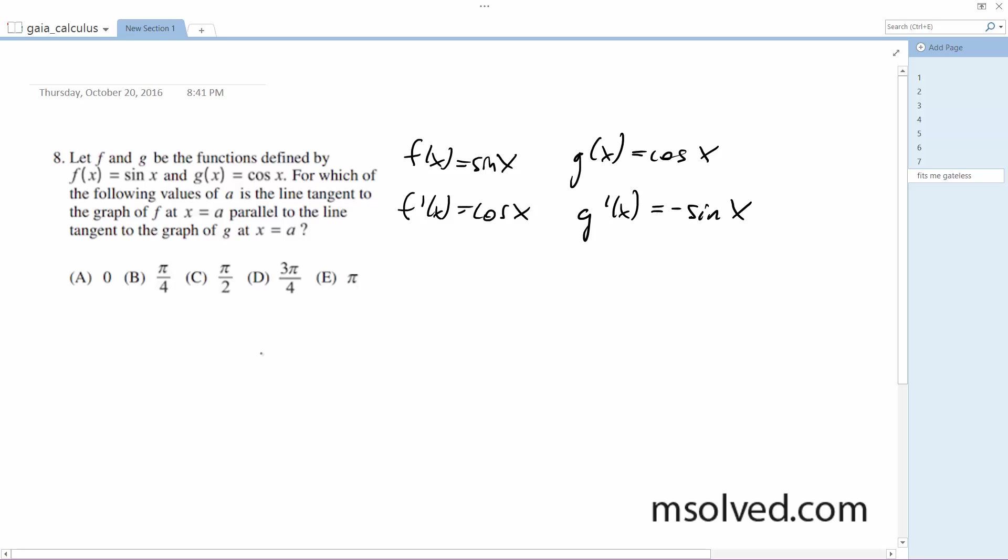So f prime of a equals g prime of a. Hence, cosine a equals negative sine of a. When does this happen?